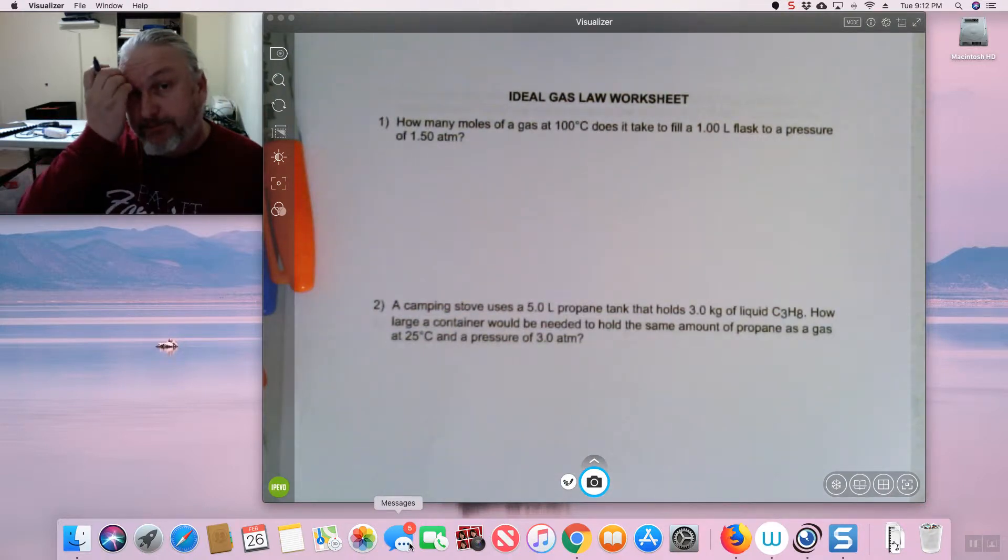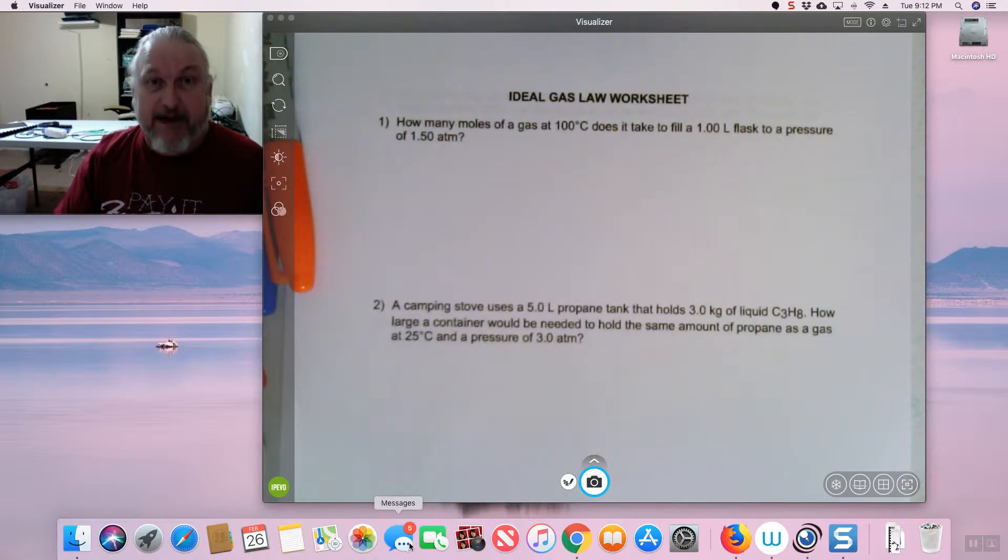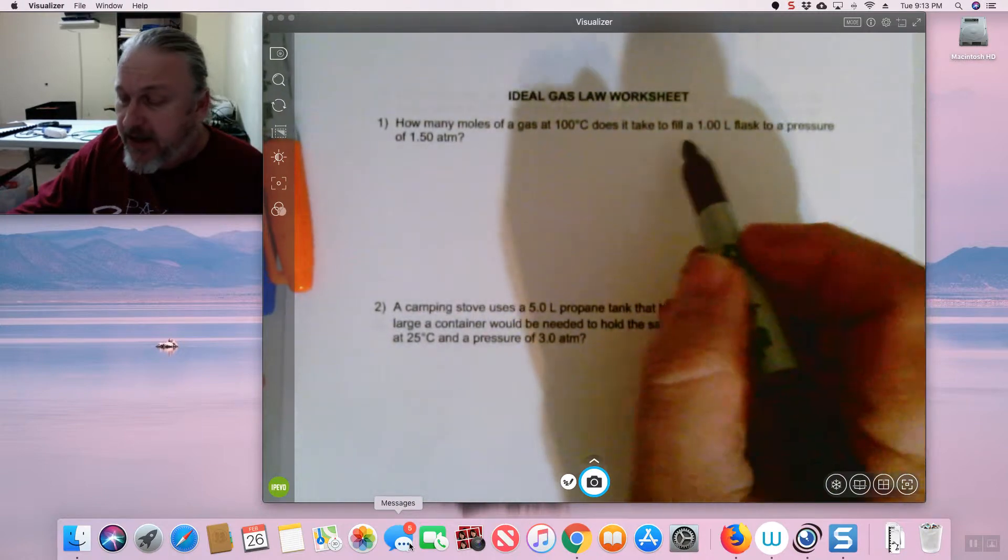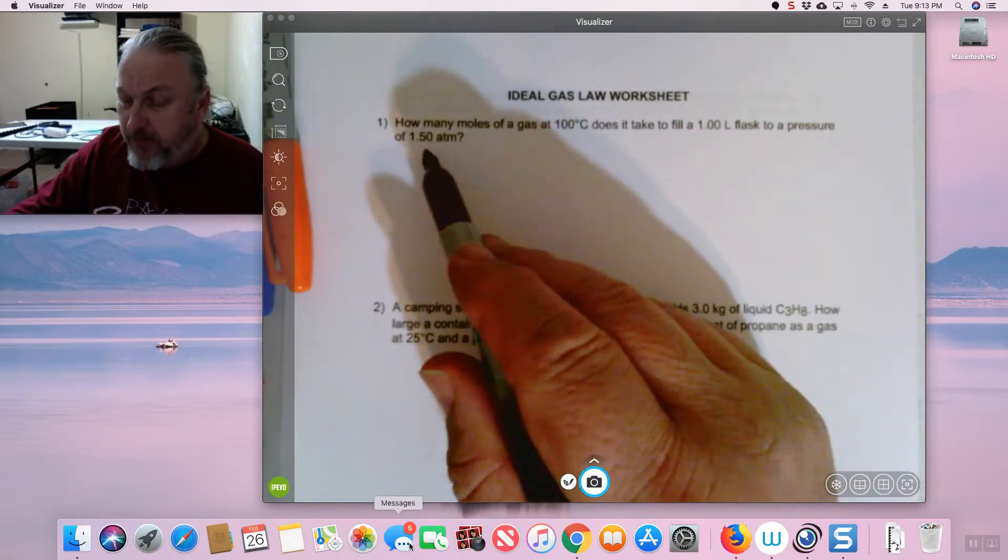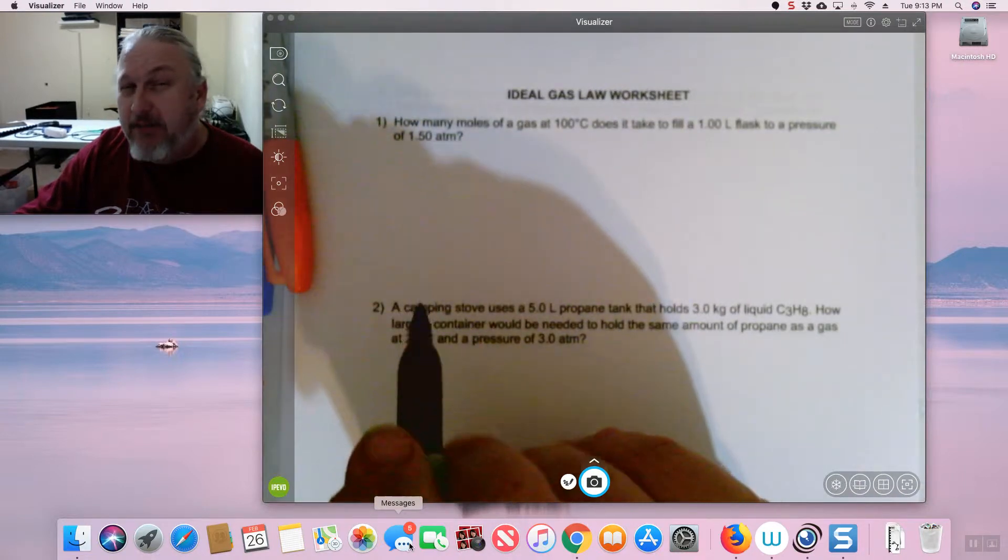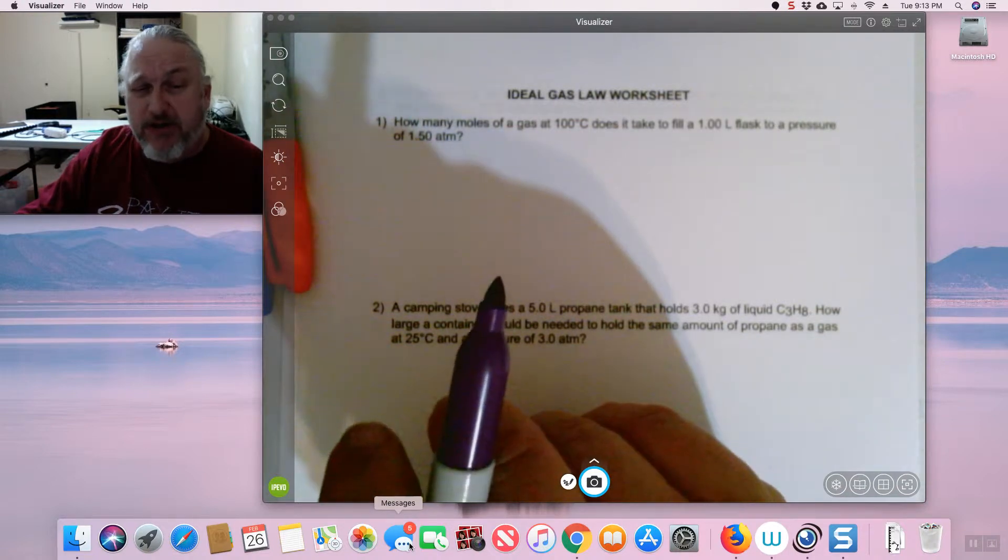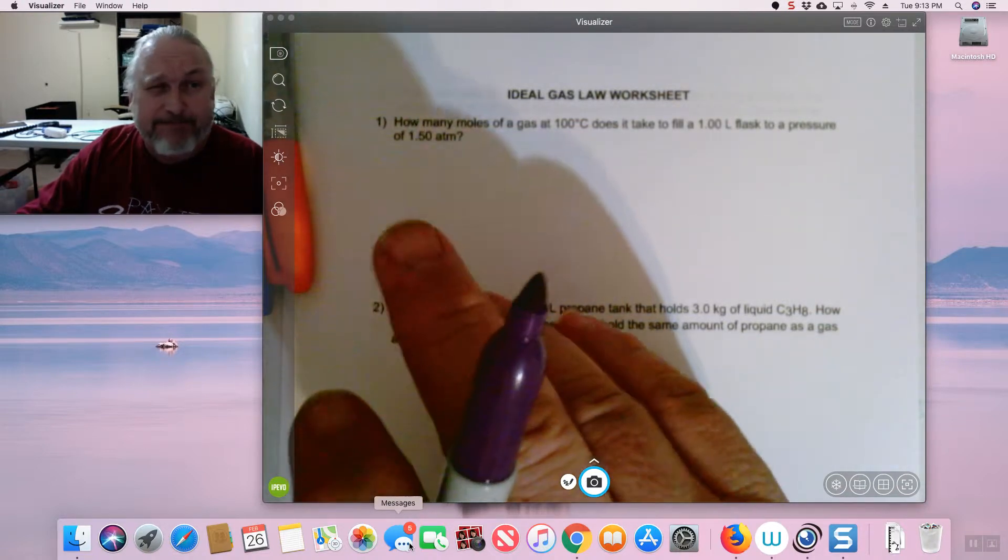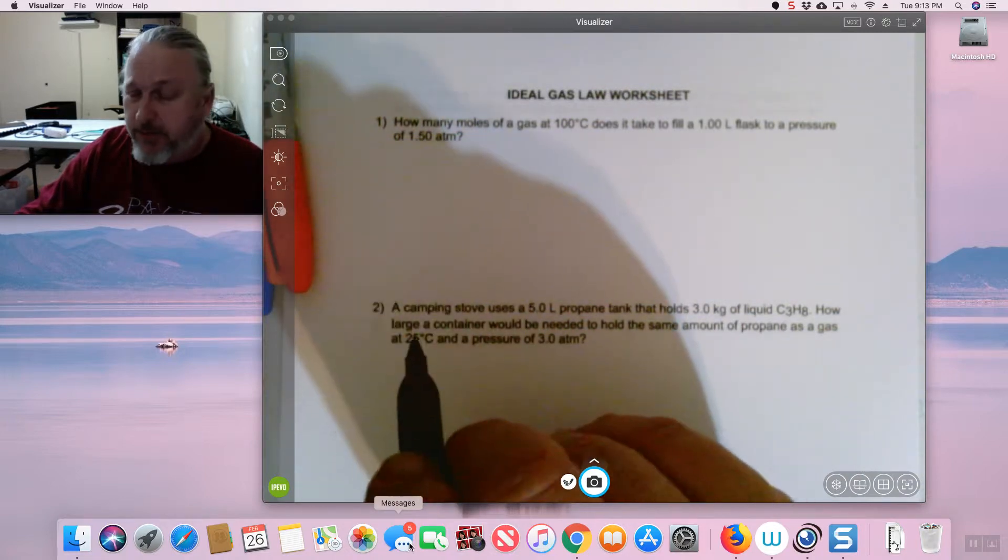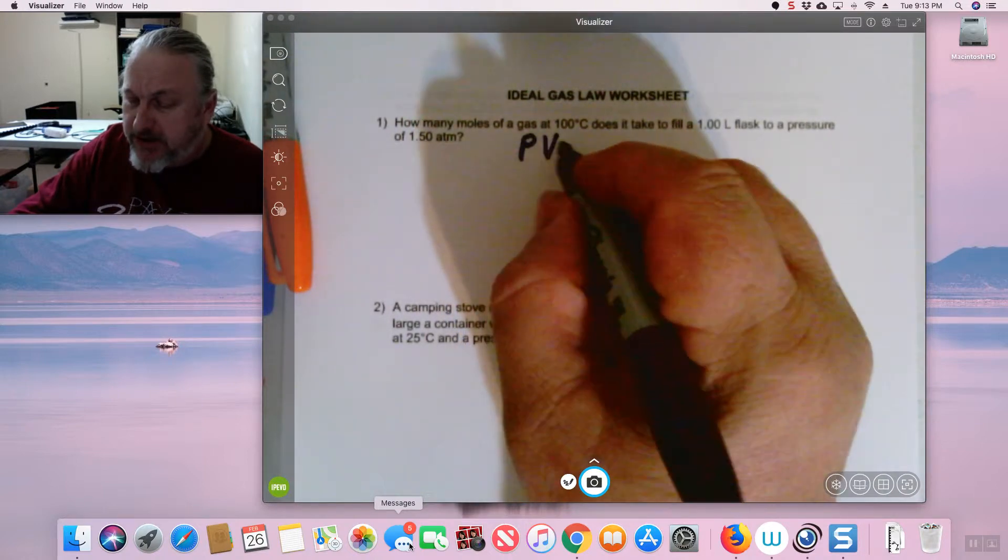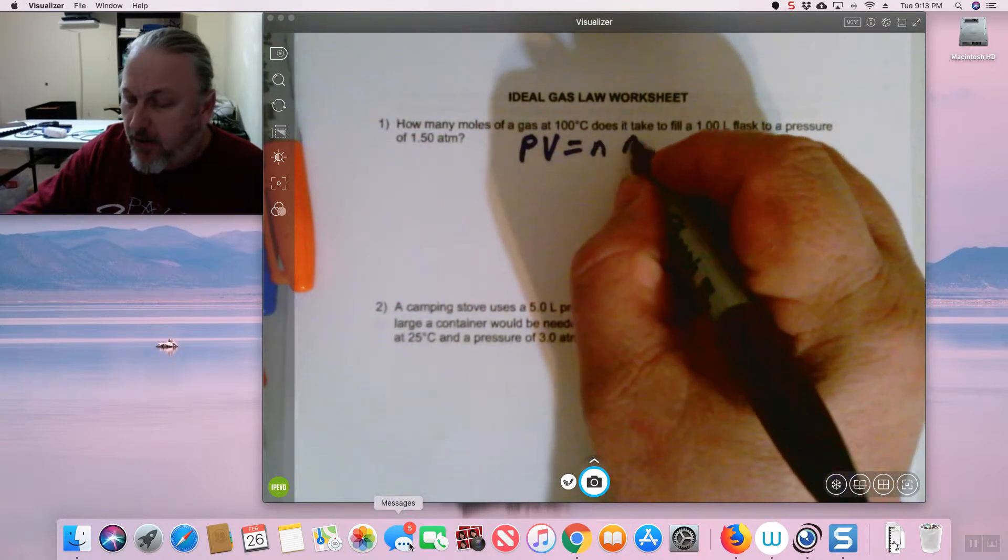Let's look at this first one right here. Now this is different than the other gas laws in that, but it's also similar in that you've got to identify your variables. Here's how you can tell that it's an Ideal Gas Law problem. If you read this, how many moles of a gas at 100 degrees C does it take to fill a 1 liter flask to a pressure of 1.5 atmospheres? At no time did you hear anything about change, did you? Right? So we're not talking about change here. What we're talking about is just variables that we've got to put in. None of those variables changed. So let's go ahead and put our gas law, Ideal Gas Law, up here, which is PV equal NRT.